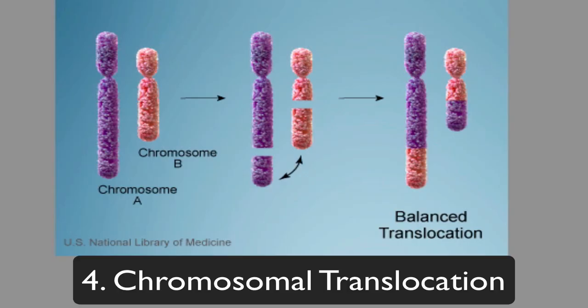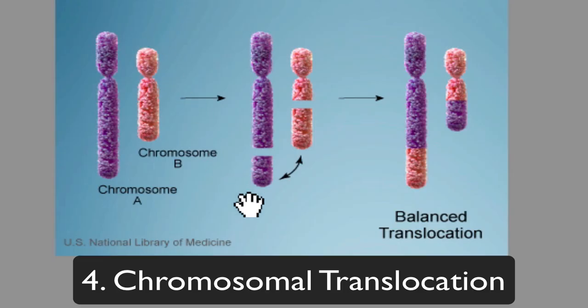The fourth and final chromosomal mutation we'll look at is chromosomal translocations. A translocation is just a movement of parts of a chromosome — we'll spend more time on this when we cover crossing over in meiosis, but here's a basic introduction. We have two different non-homologous chromosomes: chromosome A and chromosome B.